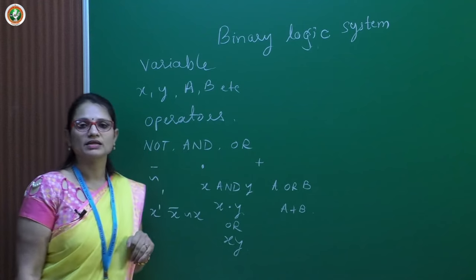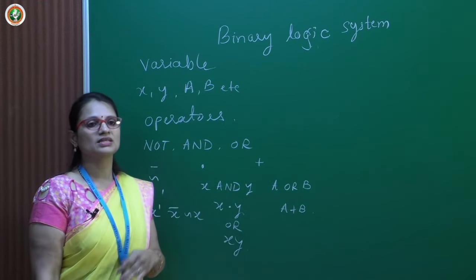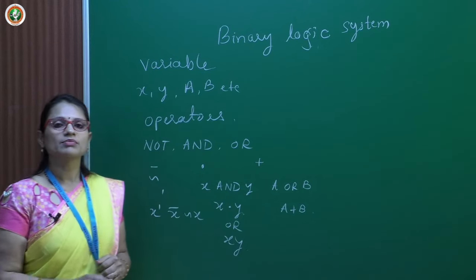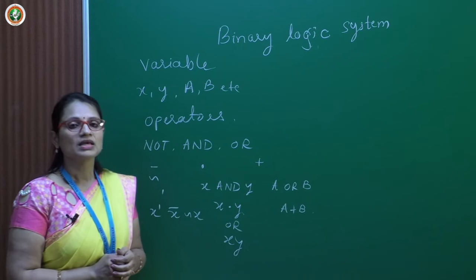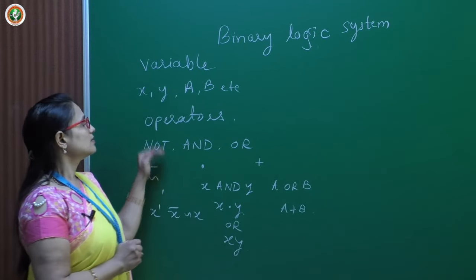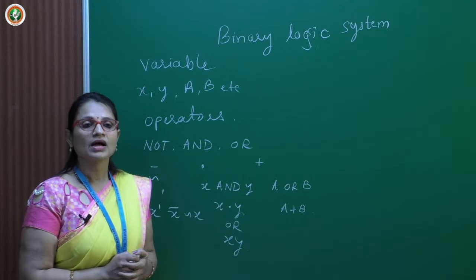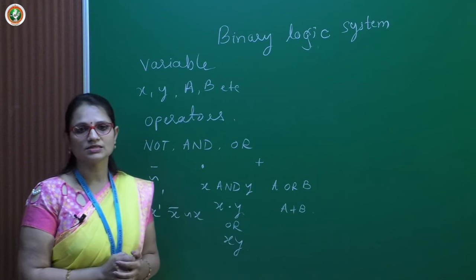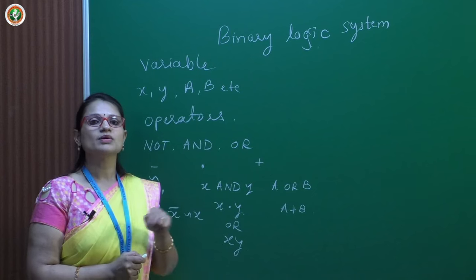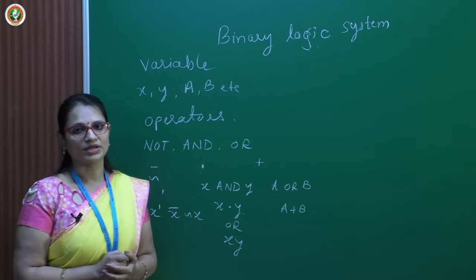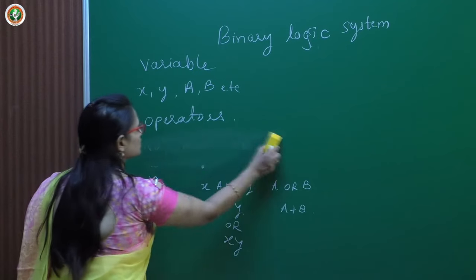When representing the binary logic system, we use truth tables. A truth table consists of columns and rows — each column contains input or output variables, and each row contains all possible values for the input variables and the corresponding output for the given operation.